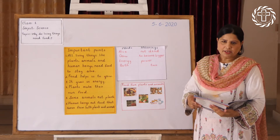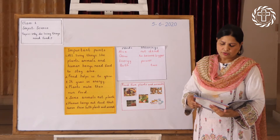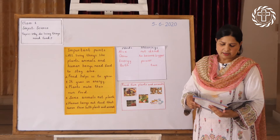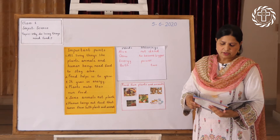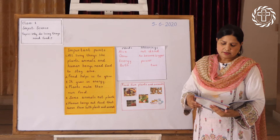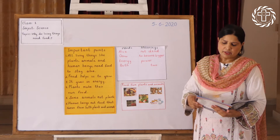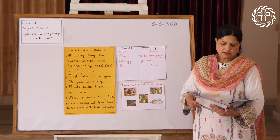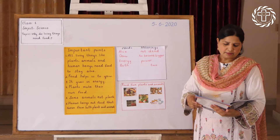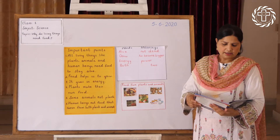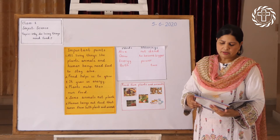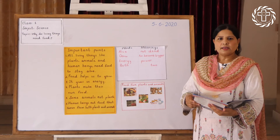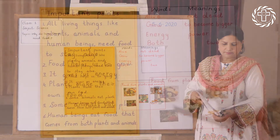Food helps us to grow and it gives us energy. Plants make their own food. Some animals eat plants, some animals eat other animals. Human beings eat food that comes from both plants and animals.